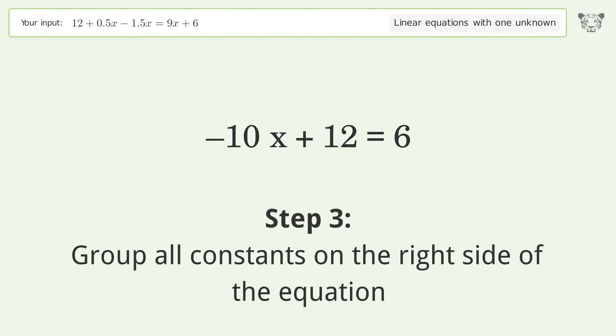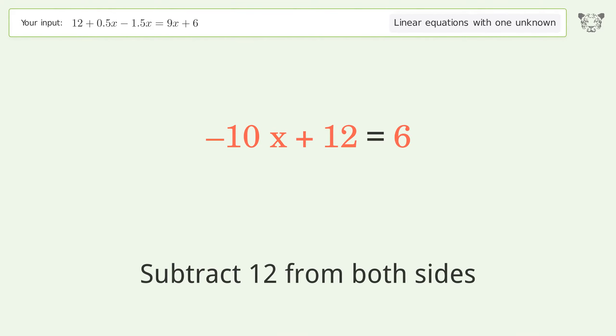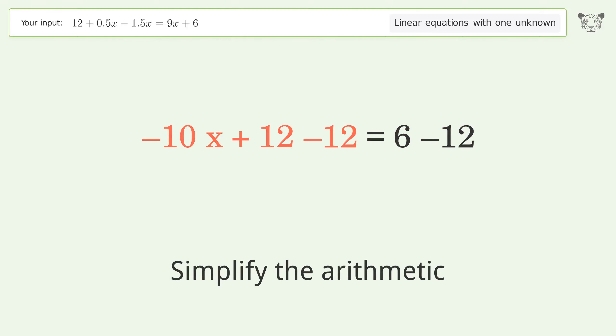Group all constants on the right side of the equation. Subtract 12 from both sides. Simplify the arithmetic.